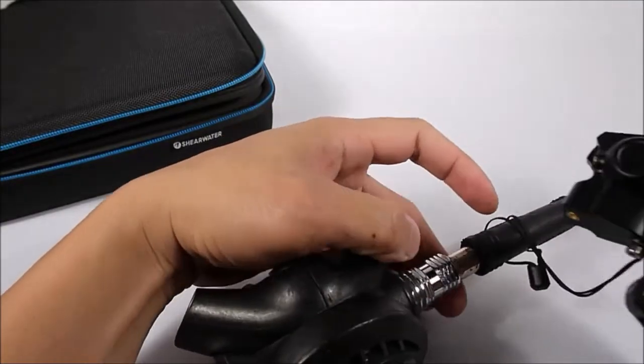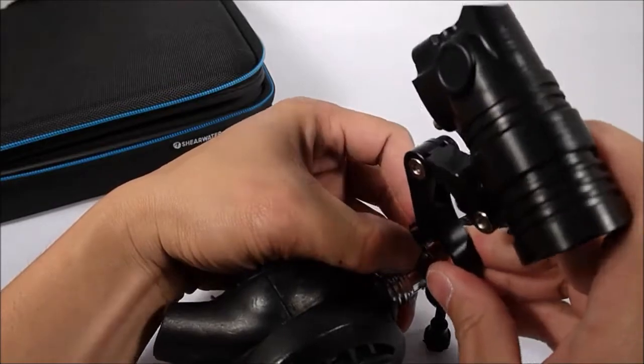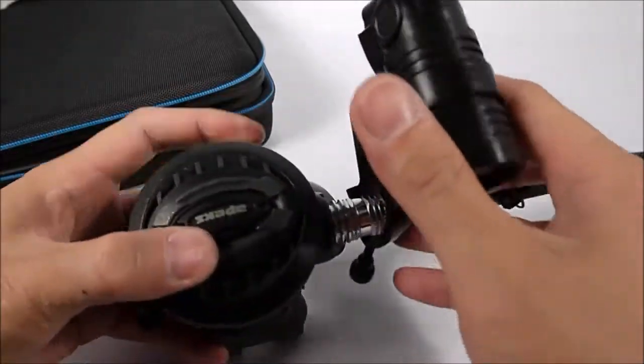To mount the assembly to your regulator, open the hose clamp screw, slip the hose clamp over the second stage hose fitting, and close the screw.